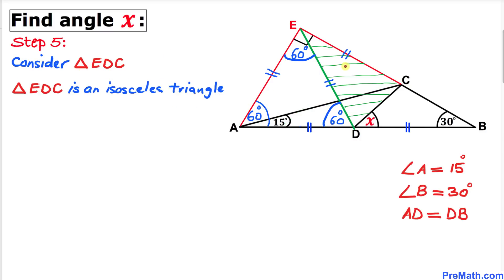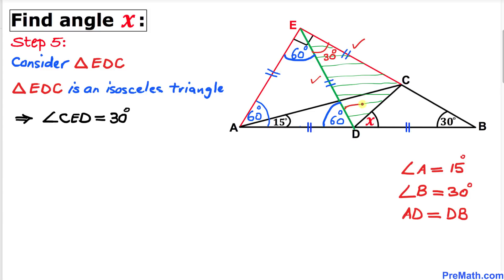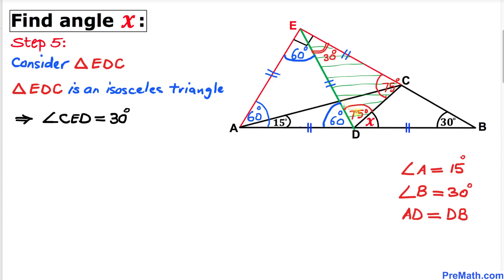Now let's focus on triangle EDC. The whole angle at E is 90 degrees, and the portion taken by triangle AED is 60 degrees, so angle CED equals 90 minus 60 = 30 degrees. Since triangle EDC is isosceles with ED equal to DC, angles EDC and ECD are equal. With the angle sum equaling 180 degrees, each of those angles must be 75 degrees. So angle EDC is 75 degrees.